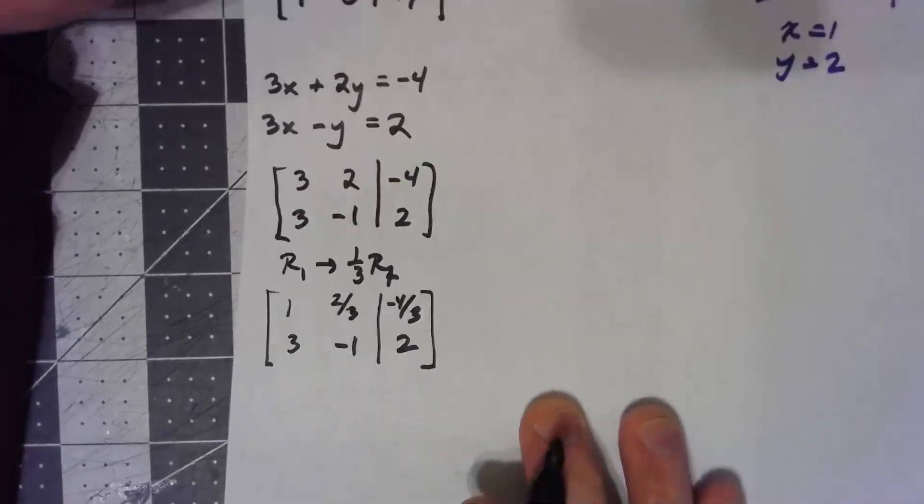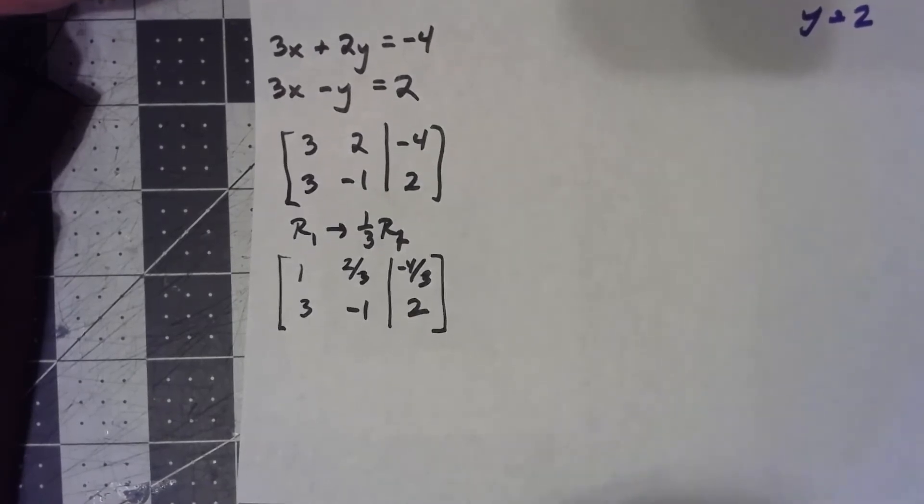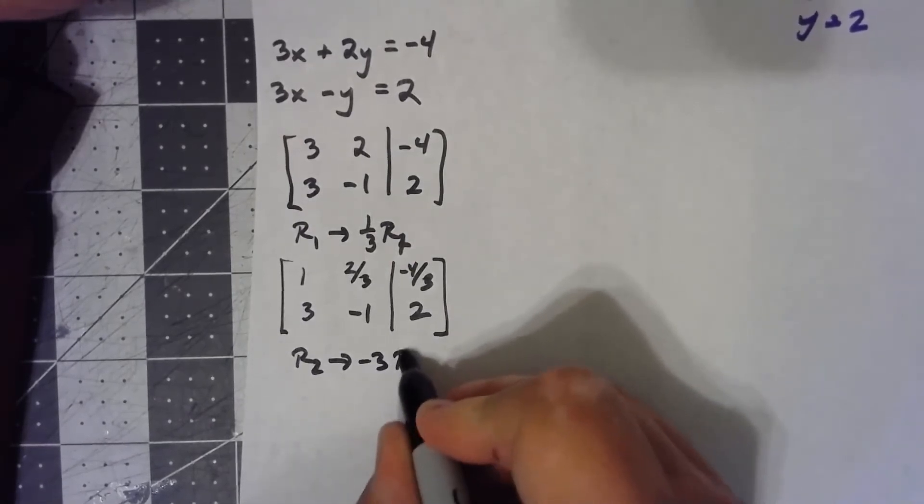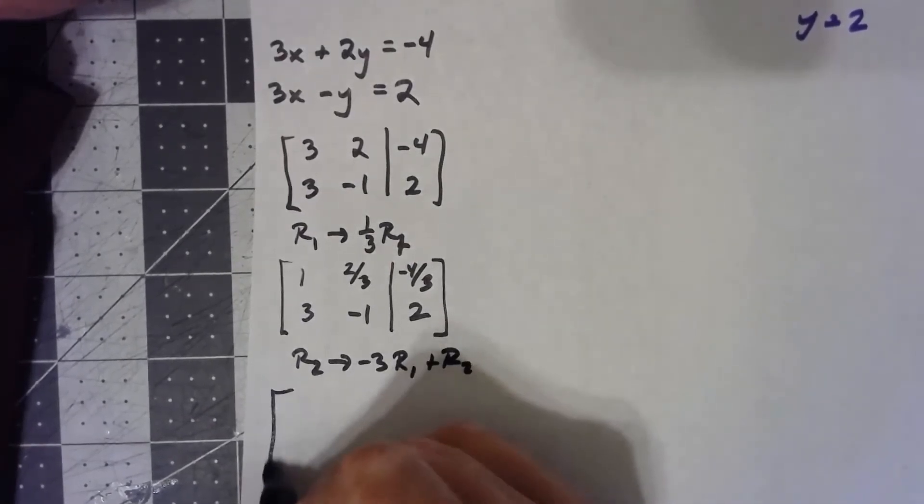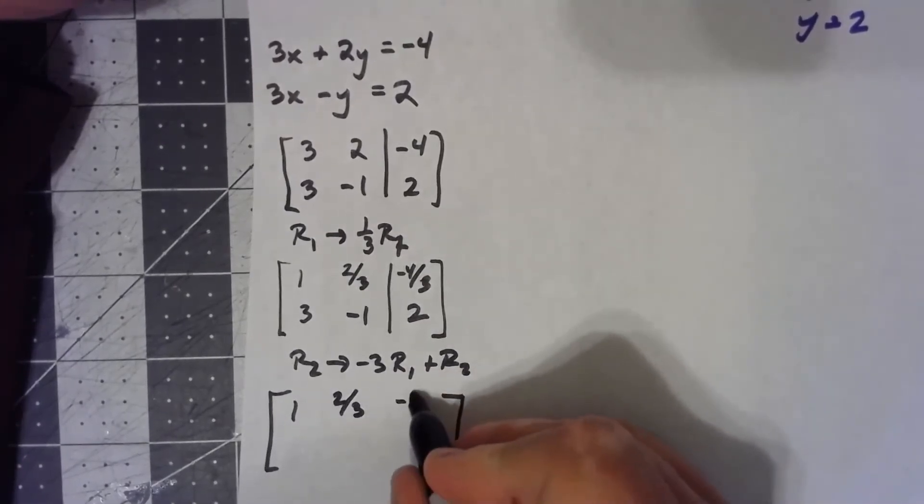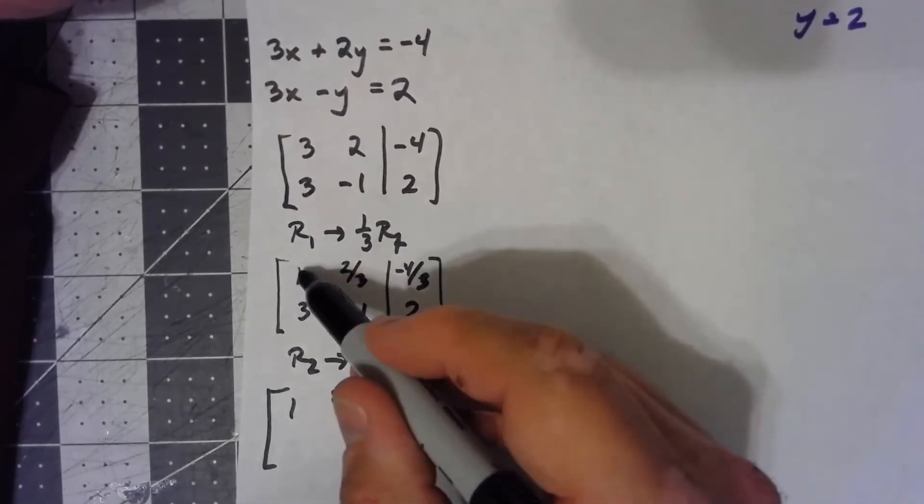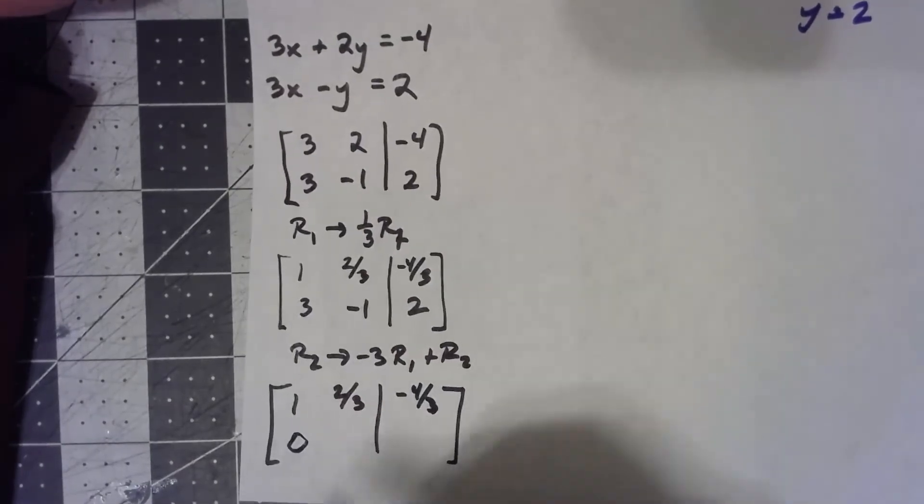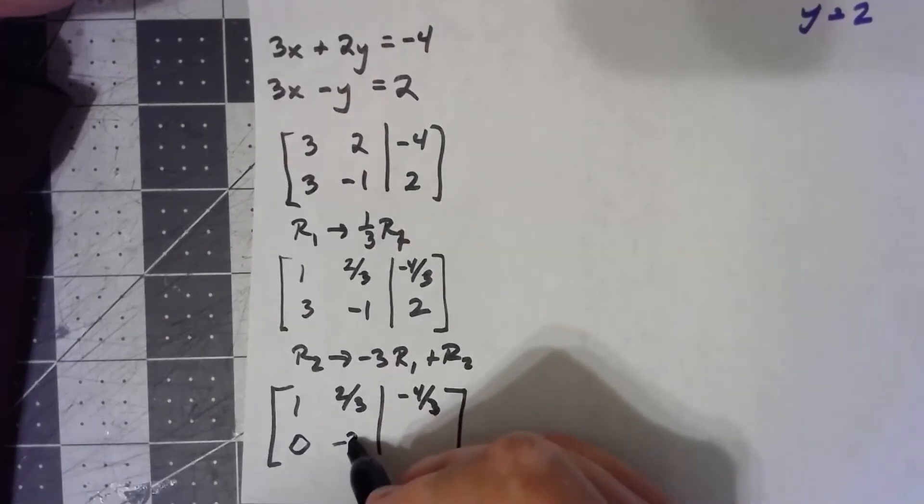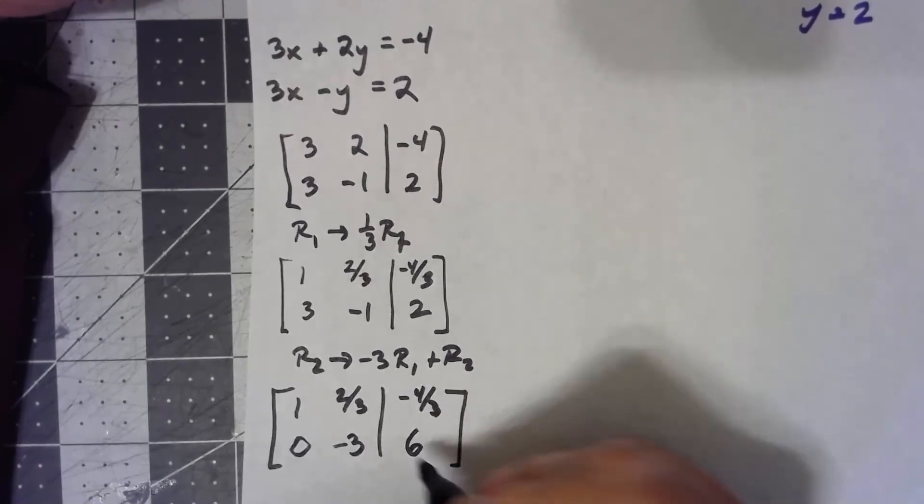And then from there, everything, I'm going to have to do the fraction math. But other than that, I'm going to go ahead and keep going as normal. So row 2 becomes negative 3, row 1 added to row 2. Not changing the first one. Negative 3 times 1 is negative 3 added to 3 is 0. That's the whole point of that. Negative 3 times 2/3rds is negative 2. So that's a negative 3. A positive 4 added to 2 gives me a 6.